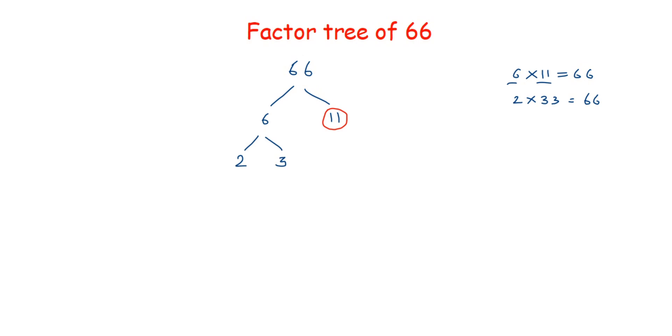Now these are the prime factors of 66. So how can we write this? So 66 equals—we have to multiply all the prime factors. We'll start with the small number and we'll write 2, 3, and 11. So 2 times 3 times 11 is 66. So this is the prime factorization of 66.